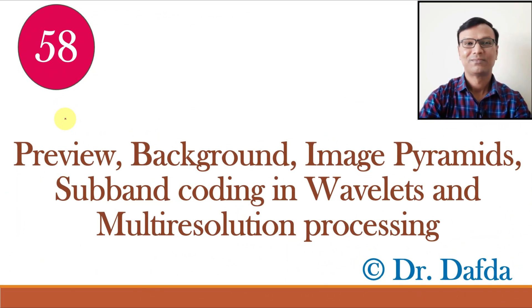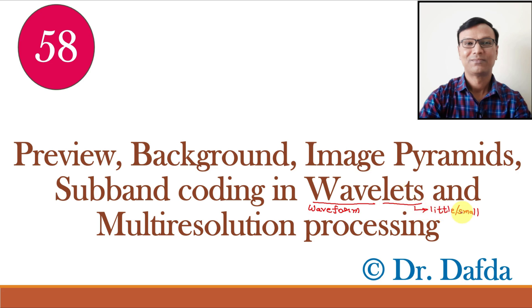We have already learned JPEG 2000, which is a wavelet-based compression in video lecture number 47, and a few basics of wavelet transform in the same lecture. Now we will study wavelet transforms in more detail. Starting with the name — wavelet is made up of two words: wave plus let. Wave means waveform and let means little or small, so wavelet means a small waveform or a ripple.